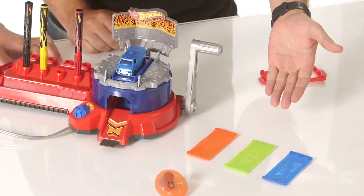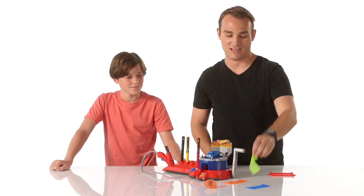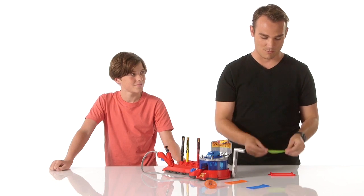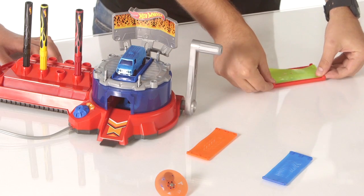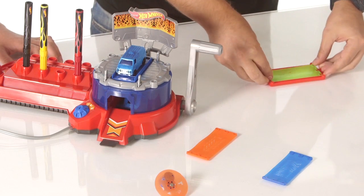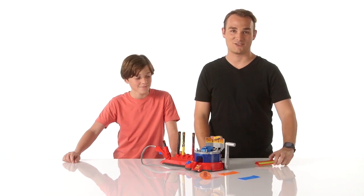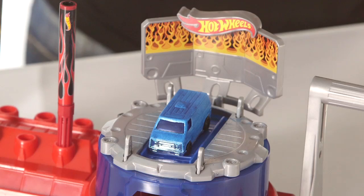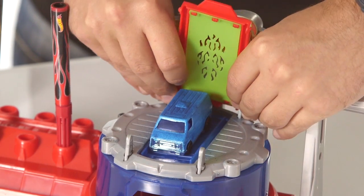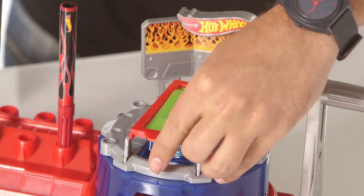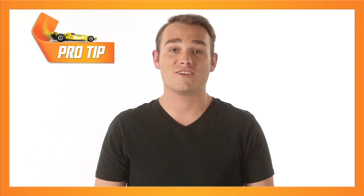The set also comes with three stencil patterns. Landon chose the flames, so we'll grab that stencil and snap it into the frame. There's an upper and lower position for the frame to snap in, based on how tall the car is. This is a higher car, so we'll use the upper area.